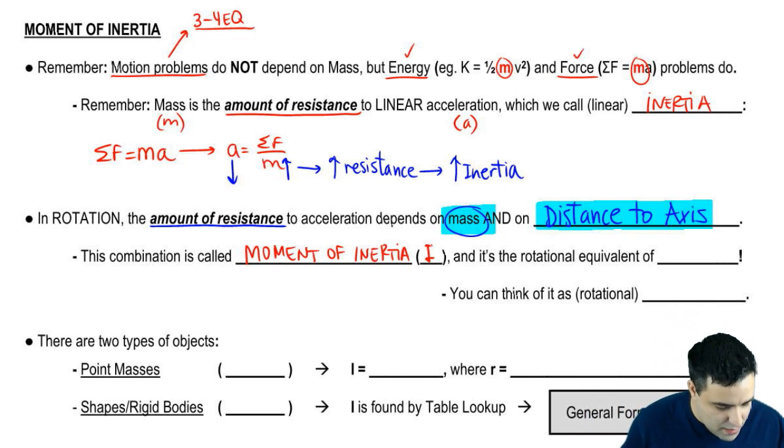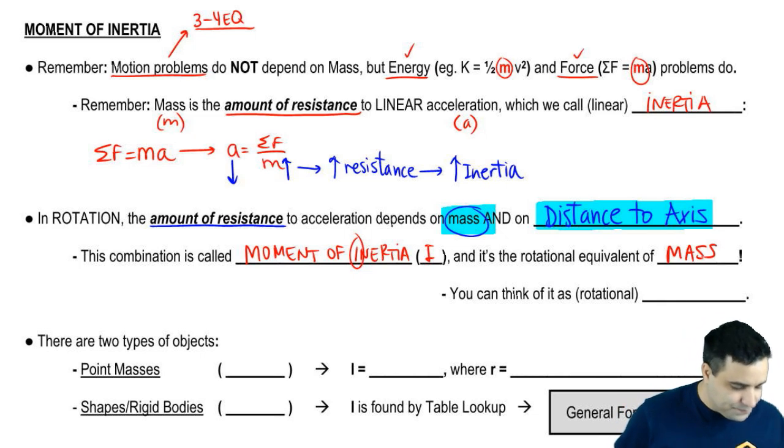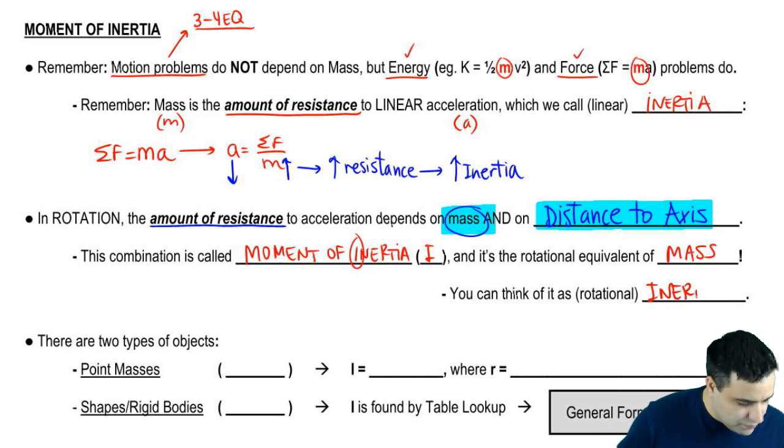And it's the amount of rotational inertia you have. Moment of inertia takes the letter I. You can think of this as just inertia, and it's the rotational equivalent of mass. And again, you can think of it as rotational inertia or rotational mass.